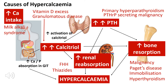A fourth major category is excessive calcitriol. This could be due to excessive ingestion of vitamin D, but various granulomatous diseases secrete calcitriol ectopically — outside its normal place of production in the kidney. Examples include TB and sarcoidosis. Lymphoma is also another condition that can ectopically produce calcitriol, leading to hypercalcemia.